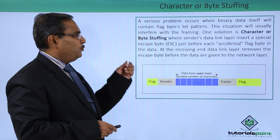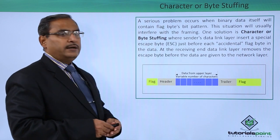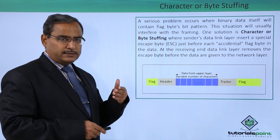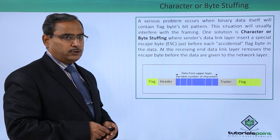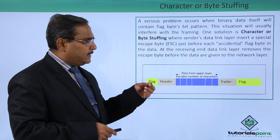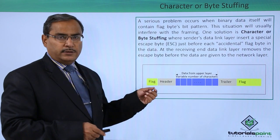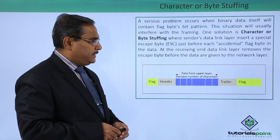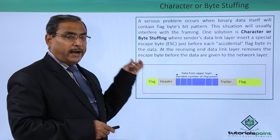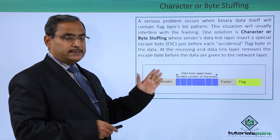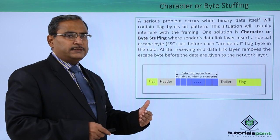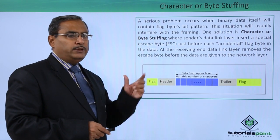One solution is character or byte stuffing. The sender's data link layer inserts a special escape byte just before each accidental flag byte in the data. So, we are going to insert an escape byte for each and every occurrence of the flag bit pattern found within the data.